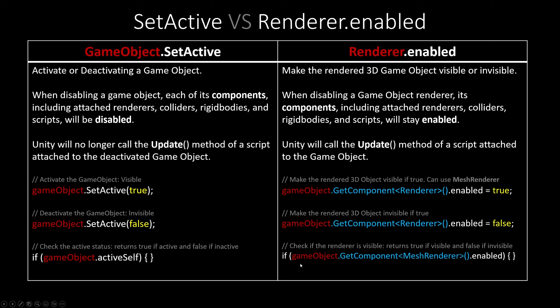On the other side, when using renderer.enabled to check if it's enabled, use an if statement with the game object, get the renderer component — whether it's a Renderer or MeshRenderer — and then check .enabled. If it returns true, the renderer is enabled. If it returns false, the renderer is not enabled.